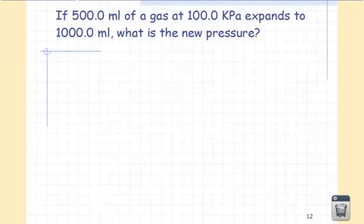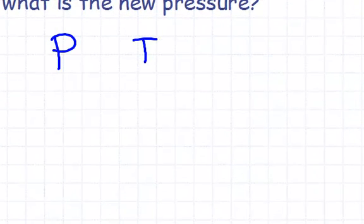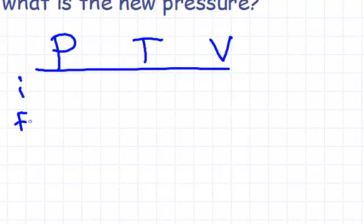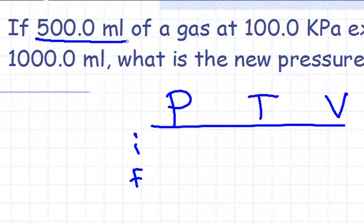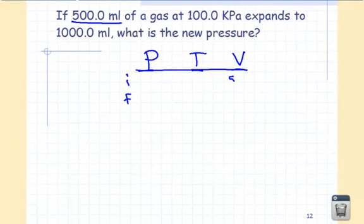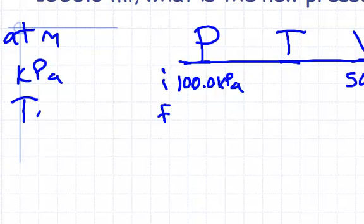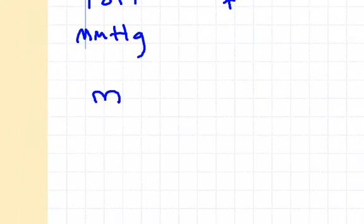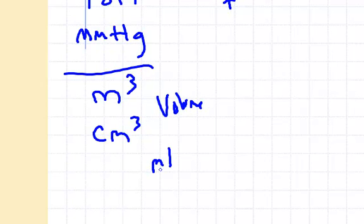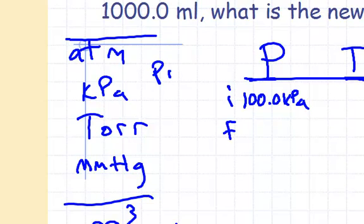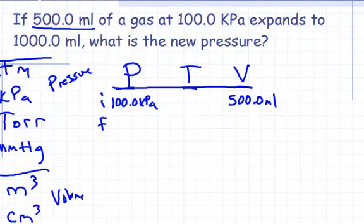You don't need to know which law it is. Write P, T, V for initial and final conditions. You have to recognize units — milliliters is volume, kilopascals is pressure. Units of pressure include four types we learned; units of volume include milliliters, liters, and anything cubed (centimeters cubed, meters cubed, etc.).